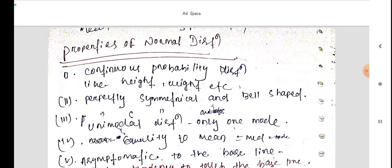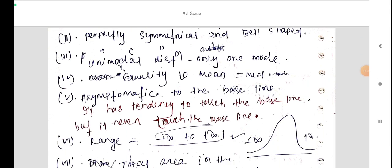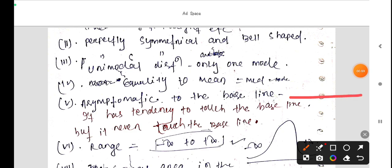First property is continuous probability distribution like height, weight, etc. we can measure. Then, perfectly symmetrical and bell-shaped. Bell-shaped normal distribution curve is like this. This is the bell-shaped curve or normal distribution curve.